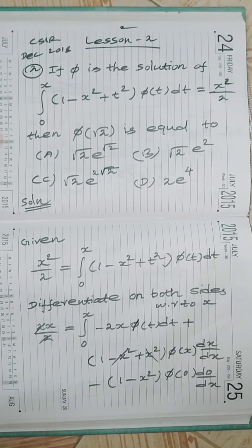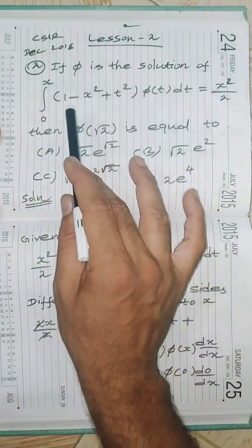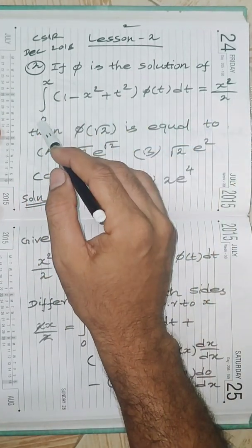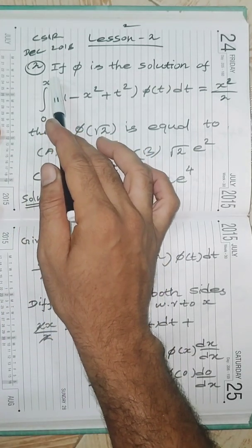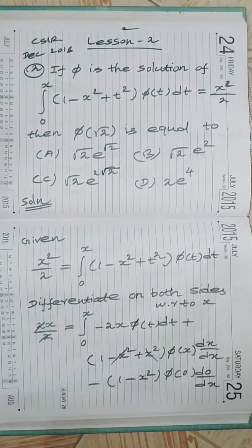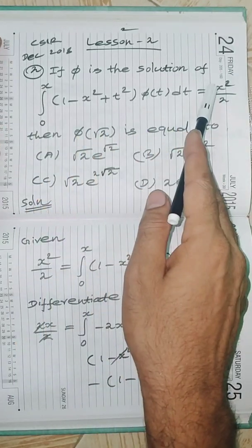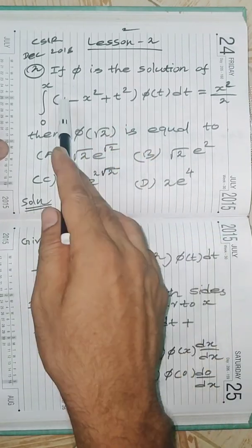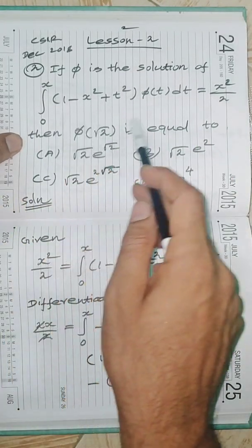Let us look at the problem. It is a well-known Volterra integral equation — it has a variable limit, so it is a Volterra integral equation (not Fredholm). The question: if π is a solution of the integral equation, integral from 0 to x of (1 minus x² plus t²)·π(t) dt equals x²/2, then find π(√2).